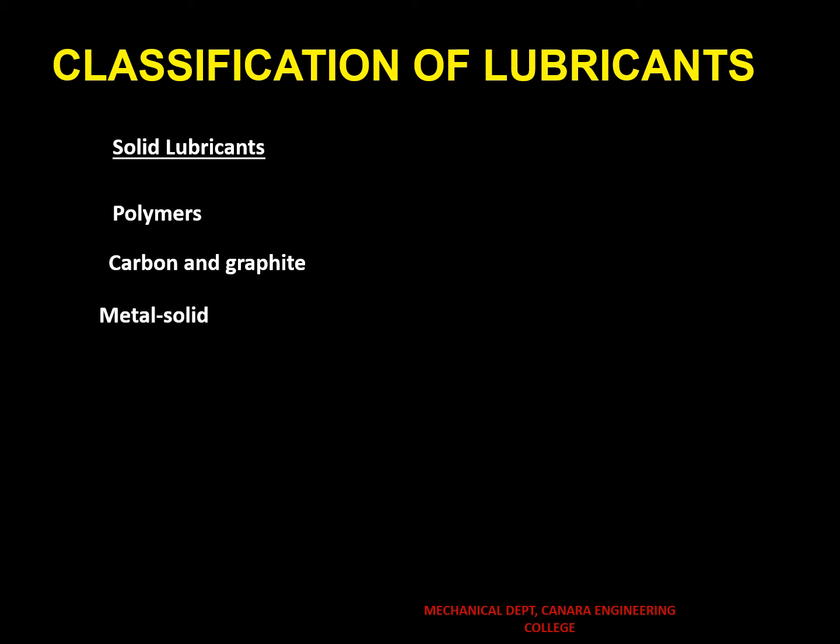Metal solid lubricants contain lamellar solids and achieve low friction through a process known as film transfer. Molybdenum disulfide is the most commonly used metal solid lubricant. Some of the advantages of metal solid lubricants like molybdenum disulfide are high load carrying capacity, good high temperature performance, and low friction.